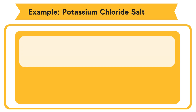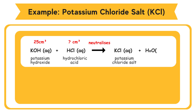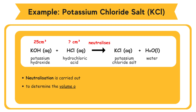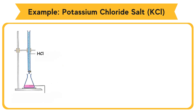Example: To prepare a pure sample of potassium chloride salt by mixing hydrochloric acid HCl with potassium hydroxide KOH. KOH(aq) + HCl(aq) → KCl(aq) + H2O(l). Neutralization is carried out to determine the volume of hydrochloric acid needed to neutralize 25 cm³ of potassium hydroxide KOH. The phenolphthalein indicator changes color from pink to colorless at the endpoint. The volume of hydrochloric acid needed is added to 25 cm³ of potassium hydroxide KOH without indicator.